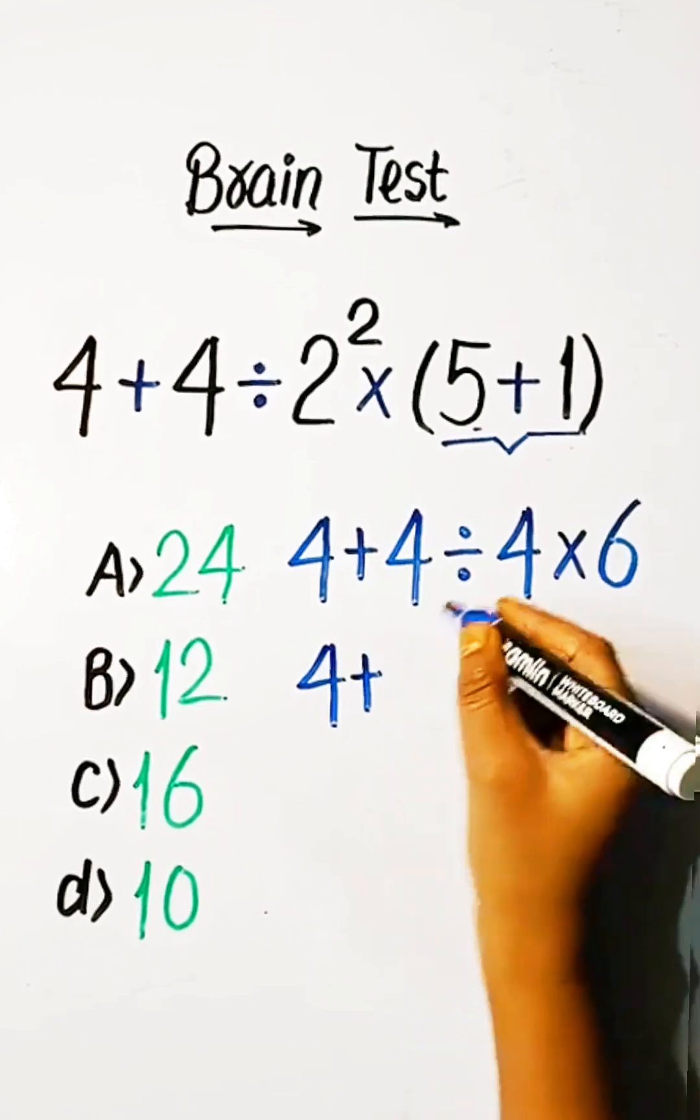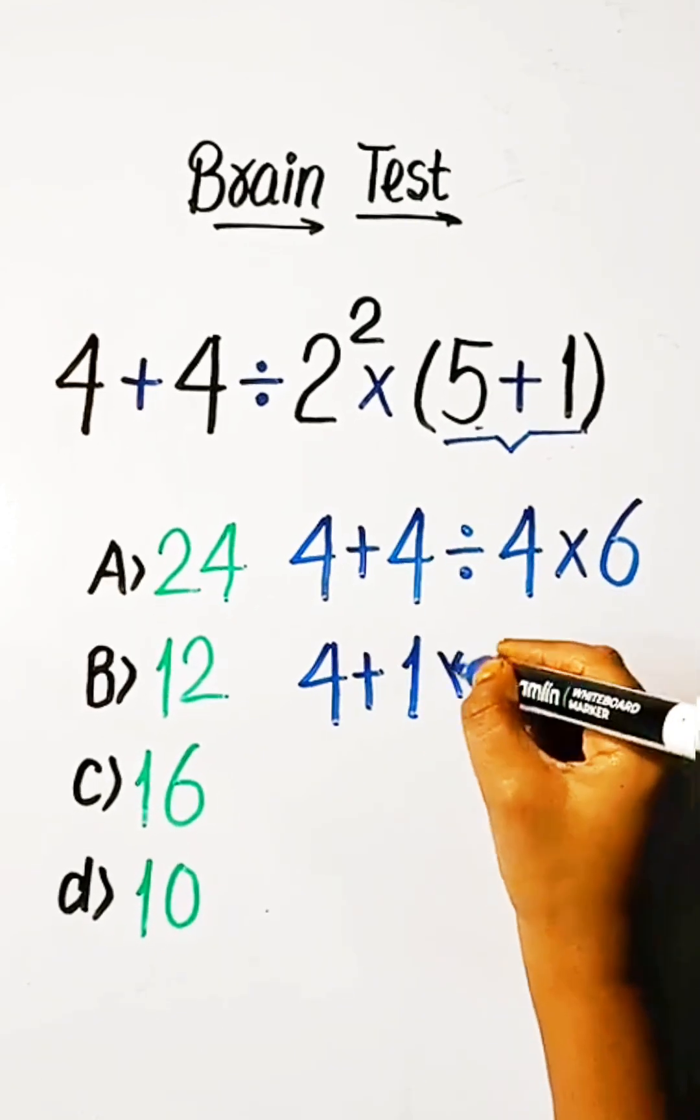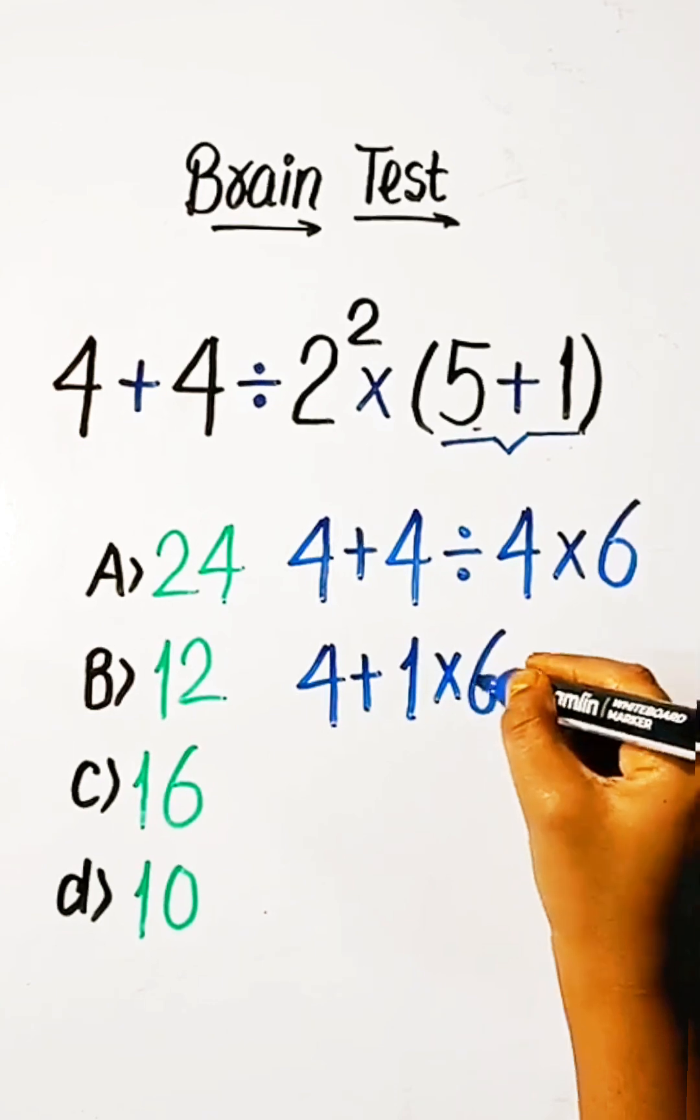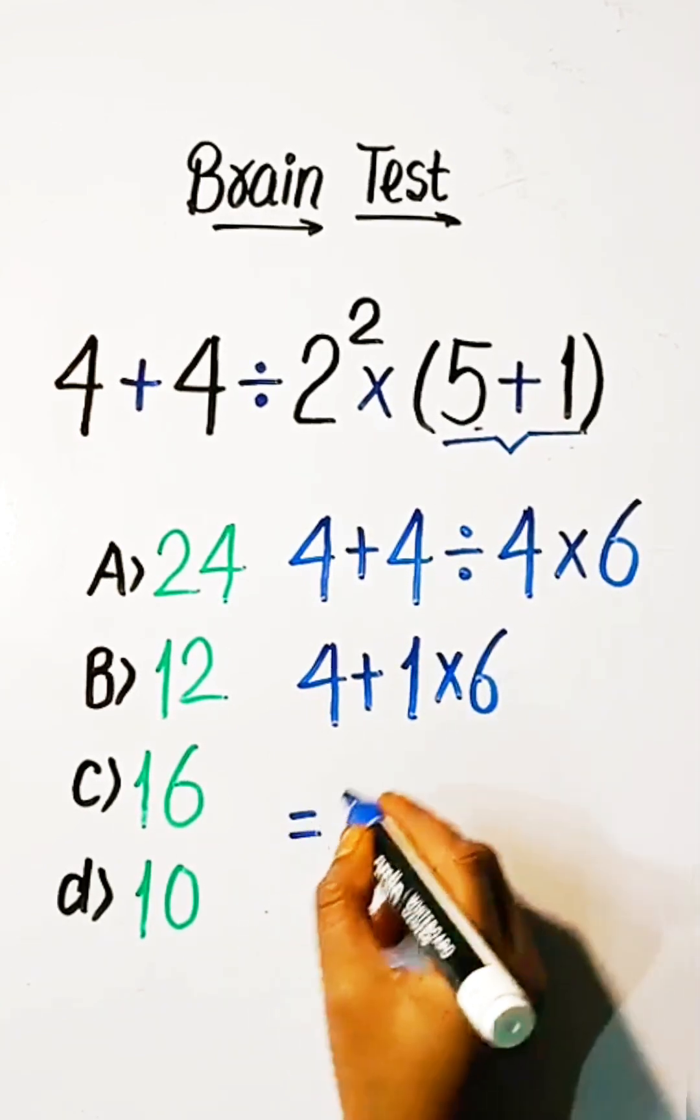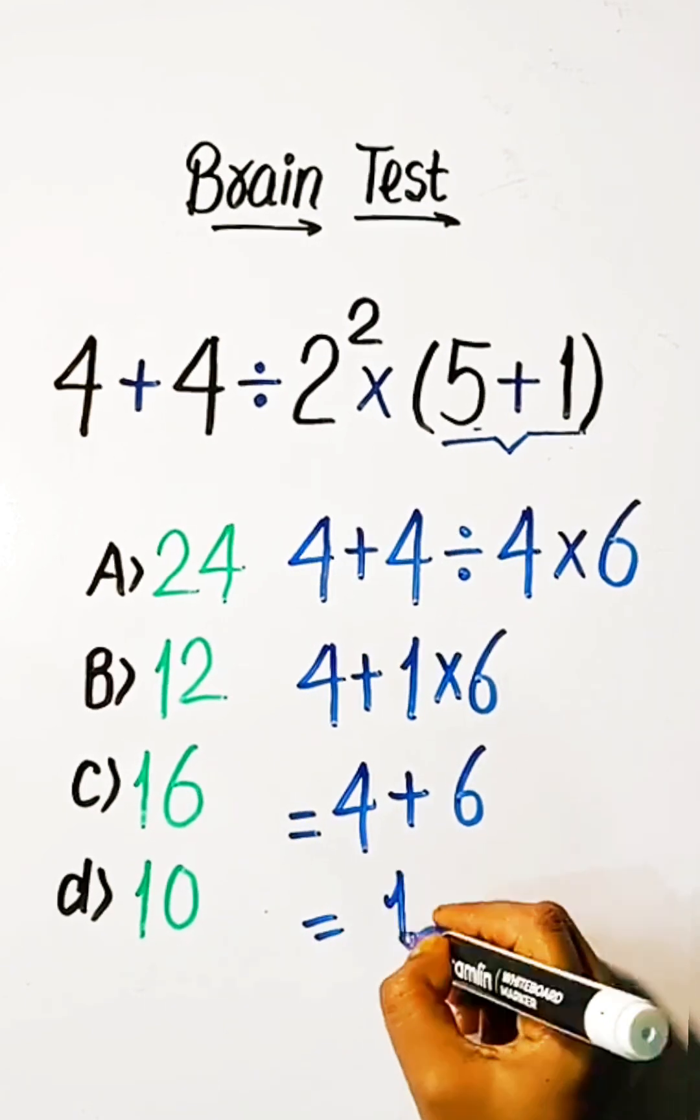4 plus 4 divided by 4, 1 into 6. 4 plus 6 equals 10.